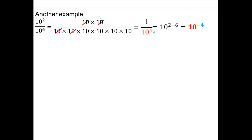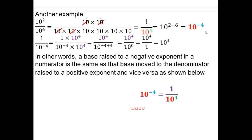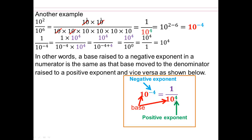Reciprocal means 1 over. So in general, what if I had 1 over 10 to the negative 4? Let's take a look. Using equivalent fractions, we are going to multiply 10 to the 4 on both numerator and denominator. Then you use your rules: 10 to the negative 4 plus 4 gives you 10 to the 4 over 10 to the 0, which is 10 to the 4. So in other words, a base raised to a negative exponent changes it into a positive exponent.